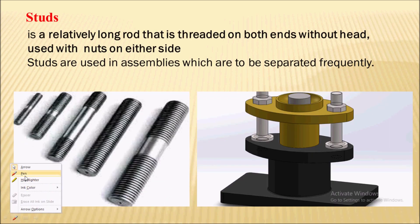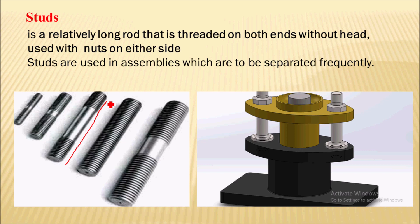Stud is nothing but — here in the image you can see this is a stud. A stud is a long cylindrical rod that is threaded on both sides and it is without a head. If we take the example of a bolt and remove the head and provide thread on both sides, then it will simply become a stud. Stud is used with nuts on either side.